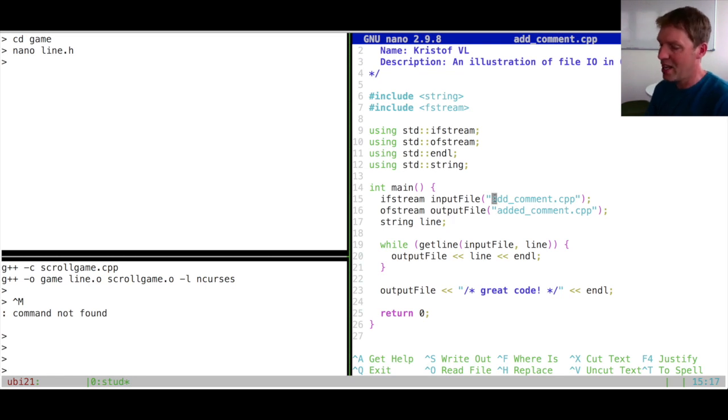So in the end what will happen is that I will open two file streams. One is input file which points to add_underscore_common.cpp and one is output file which points to add_underscore_common2.cpp. If this file does not exist yet it will be created when you output things to it. So in this while loop, as long as there is a line still to be read from the input file, we're putting this line to the output file together with an endline so that the formatting stays the same. And then at the end we also output the string great code to the output file as well.